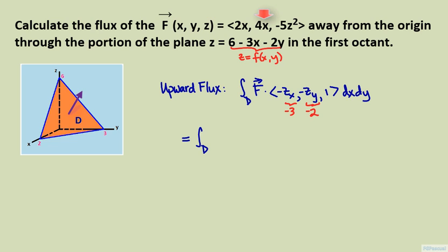Taking the dot product of capital F with our normal vector, 2x times positive 3 is equal to 6x, 4x times positive 2 is equal to 8x, minus 5z squared times 1 is minus 5z squared.